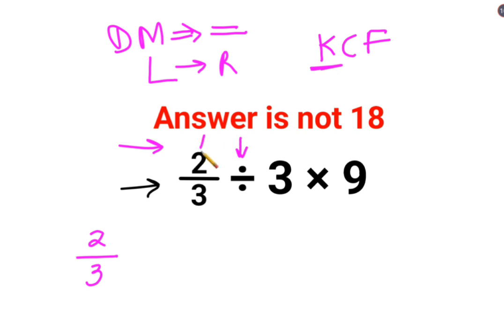Where K stands for keeping the first number as it is. C stands for changing the division sign to multiplication. F stands for flipping or taking reciprocal of 3 which is 1 upon 3.